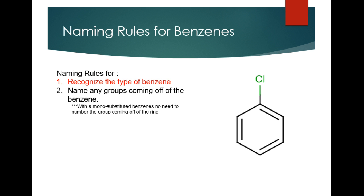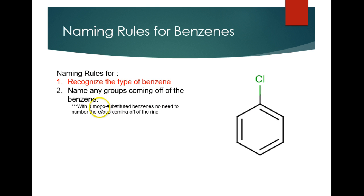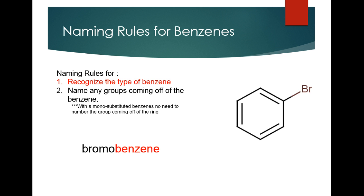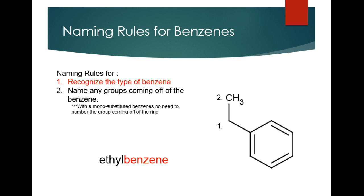When you have benzene-based compounds, there are some special naming rules. First, you have to recognize the type of benzene that is the backbone. Then you name any groups coming off of that benzene. This is done a little differently depending on how many substituents are attached. With just one group attached, this is called monosubstituted — there's no need to number anything. So this would simply be called chlorobenzene, this would be bromobenzene, and this would be ethylbenzene.